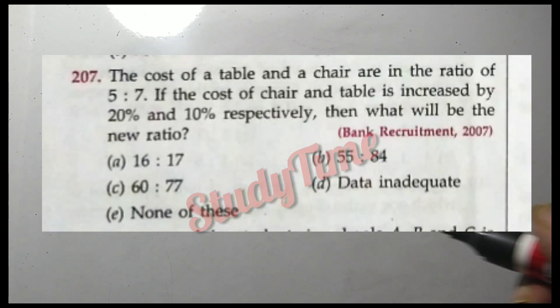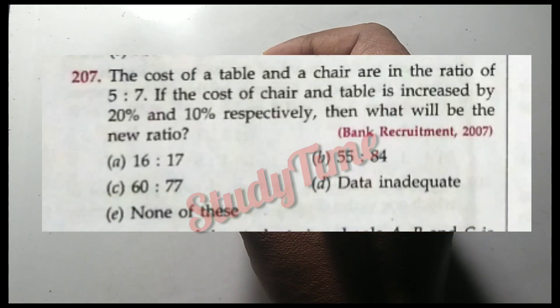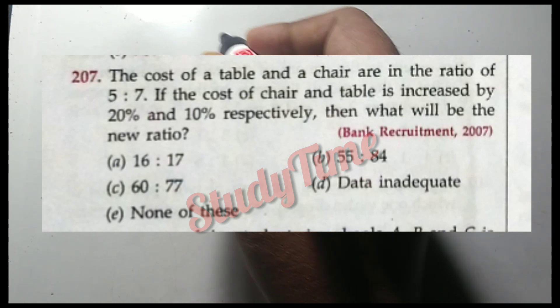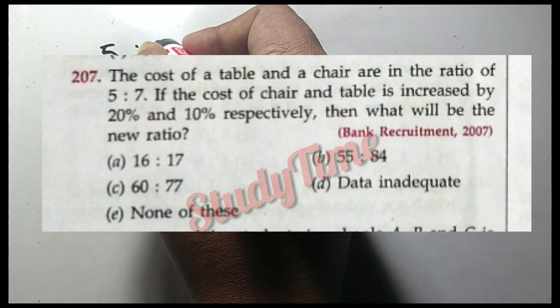Question number 207: The cost of a table and a chair are in the ratio of 5 to 7.